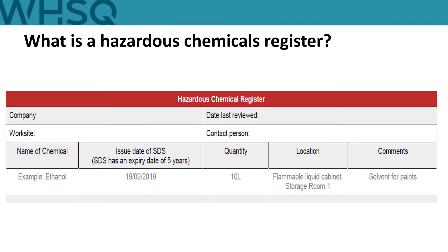You can use the Safe Work Australia template to develop a register that you can tailor to your needs. The register can be used to record other useful information such as the issue date of the SDS, the name of the manufacturer, associated risk assessment reference, or the storage location. However, the minimum requirement is to have the list of the product names and the SDS for each product. You can find a copy of the register template on our website.